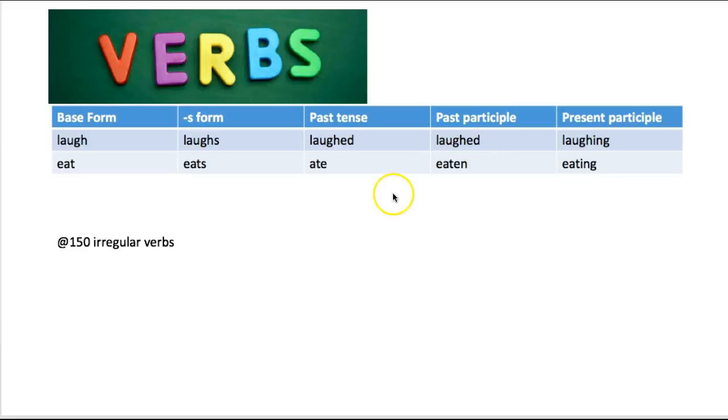The verb eat however is an irregular verb and as you see, we have the past tense is ate and the past participle is eaten. Because of this, these verbs are a little more difficult to predict and there's over a hundred and fifty of them. There's a lot of irregular verbs in English, so if you have trouble with the irregular verbs you are going to need to go back and review them.